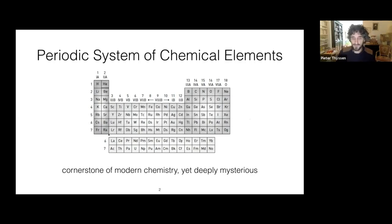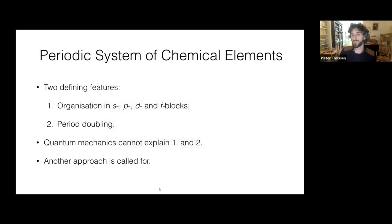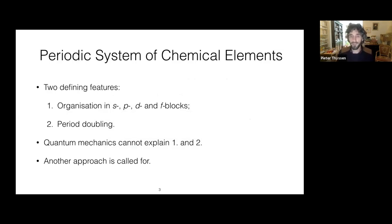Despite the quantum revolution, the periodic system of chemical elements has remained something of a mystery till the present day. Quantum mechanics, after all, cannot explain the overall structure of the periodic table — neither the organization in the familiar S, P, D, and F blocks, nor the so-called period doubling can be derived in a truly a priori manner, and so they remain in need of explanation. Clearly, another approach is called for.